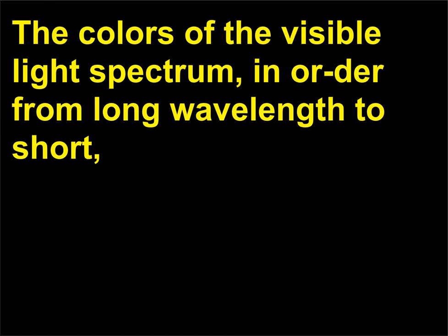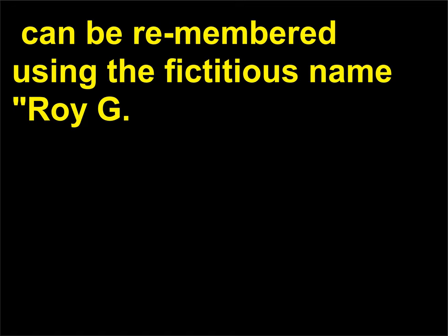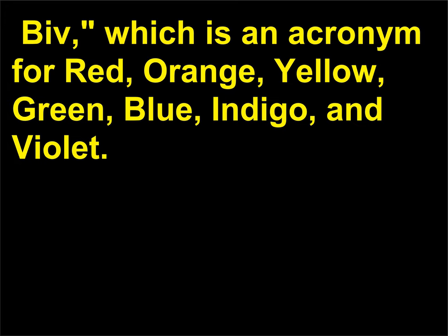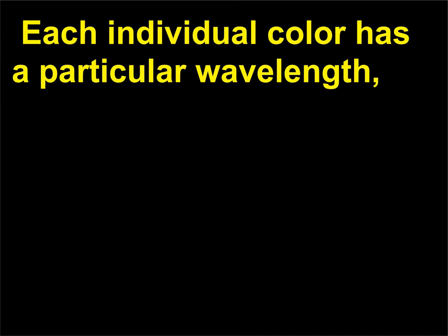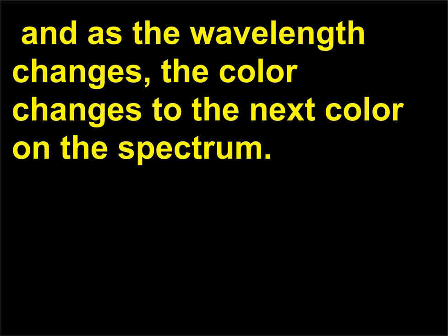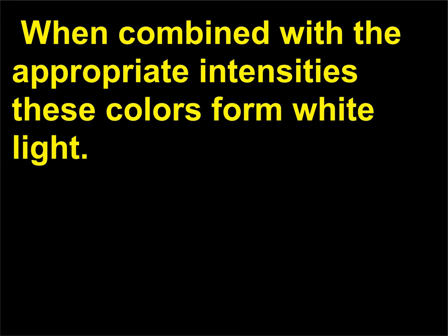Who is Roy G. BIV? The colors of the visible light spectrum, in order from long wavelength to short, can be remembered using the fictitious name Roy G. BIV, which is an acronym for red, orange, yellow, green, blue, indigo, and violet. Each individual color has a particular wavelength. As the wavelength changes, the color changes to the next color on the spectrum. When combined with the appropriate intensities, these colors form white light.